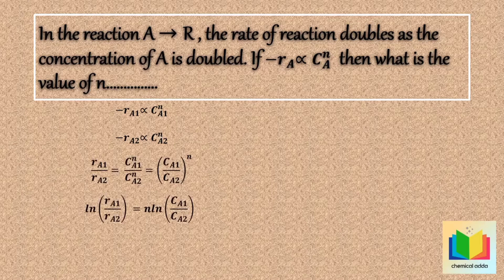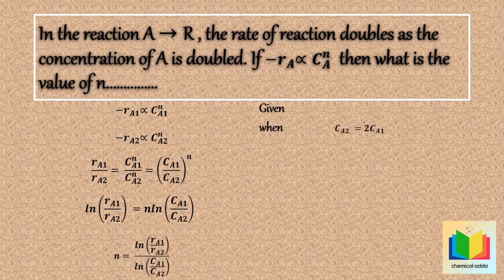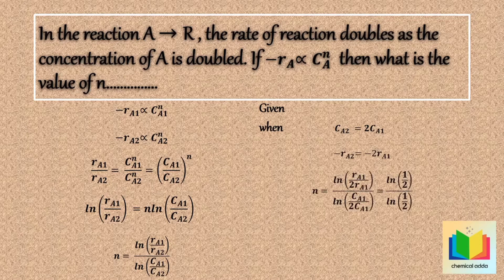Taking the natural log of both sides, n is equal to ln(cA1/cA2). Now given that when cA2 is equal to twice cA1, minus rA2 is equal to minus 2 times rA1. Substituting into the equation: n = ln(rA1 / (2·rA1)) divided by ln(cA1 / (2·cA1)). After solving this, we get n is equal to 1. Hence the answer is option B: 1.